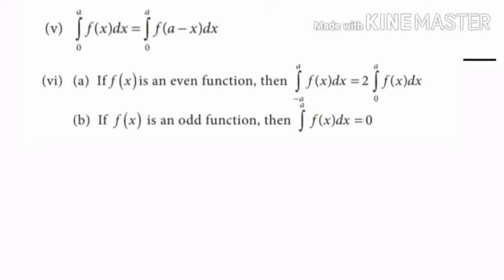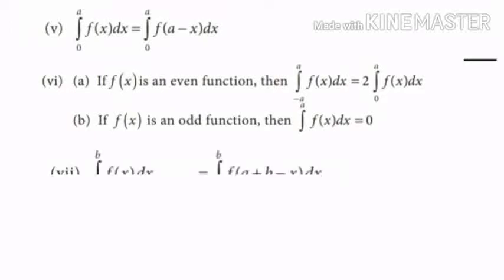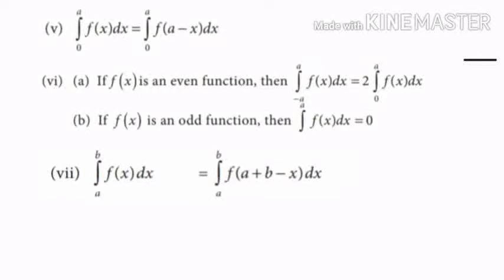The sixth property says that if f(x) is an even function, then the integral from minus a to a of f(x) dx can be written as two times the integral from 0 to a of f(x) dx. And if f(x) is an odd function, then the integral from minus a to a of f(x) dx is equal to zero.